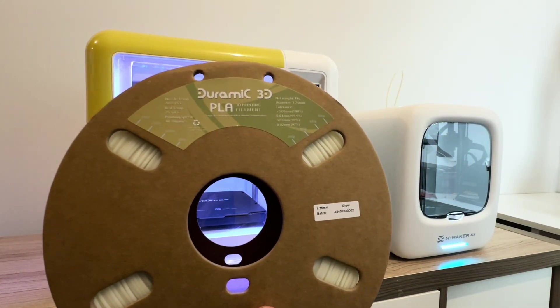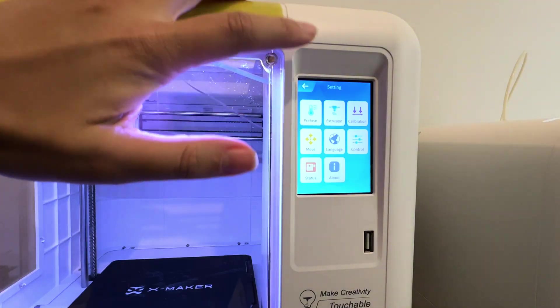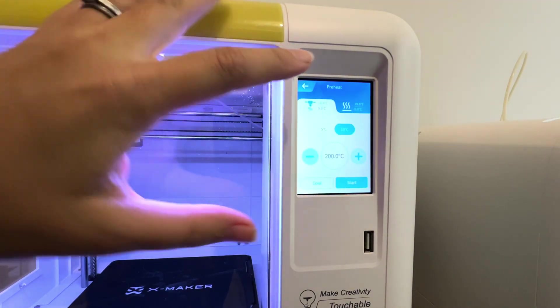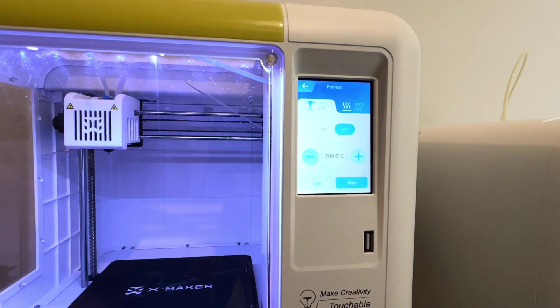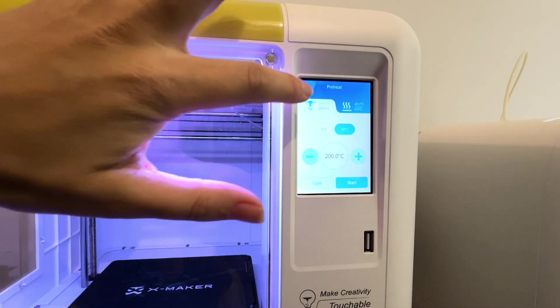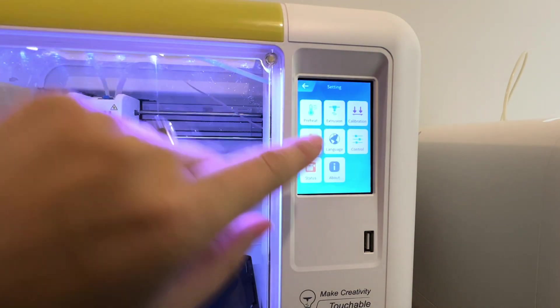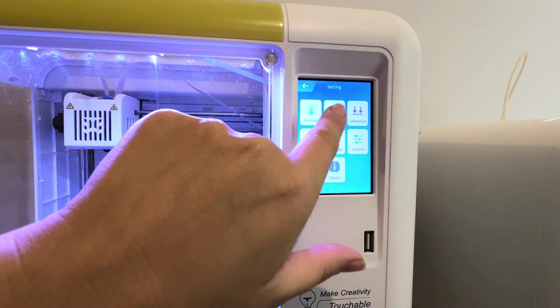I'll show you what we do on the touch screen. We're going to start off by preheating the bed. We'll just click on preheat there and then start. That's going to preheat the bed and nozzle to 200 degrees. Then we'll go back and it'll take a while for this to preheat.